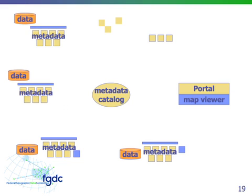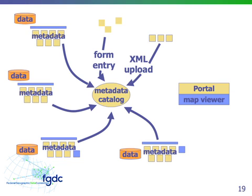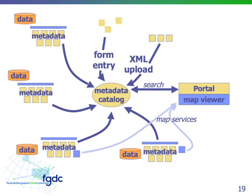Here's a further illustration of those three methods. You can have form entry or XML upload, or you can have a collection of metadata at your organization. Four different organizations with metadata catalogs can offer their content into the general metadata catalog, which harvests all metadata records from each sub-catalog to speed search. The portal is the human web interface that allows for search on the catalog, and if there is a link in the metadata for a map service, those services can be rendered through the map viewer via a logical URL within the metadata.